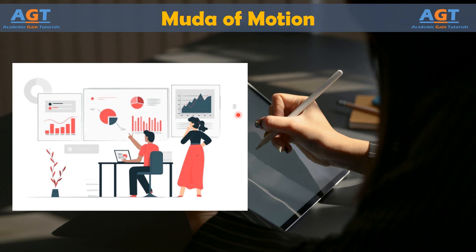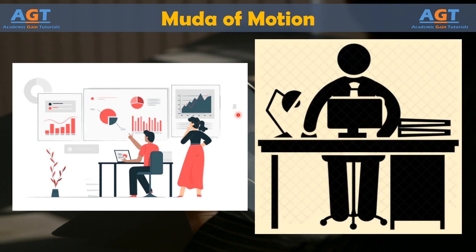It seems like an inconsequential detail, but imagine what happens when the data employee completes this process hundreds or thousands of times a day. The waste can absolutely add up. If each data entry employee completes 600 entries an hour on average, and there are 10 employees on a team, the team is completing 48,000 entries each day.